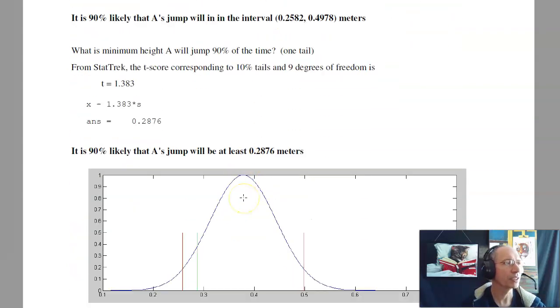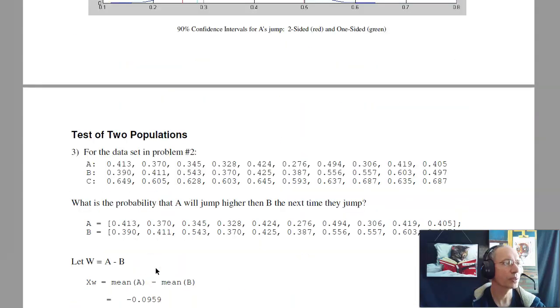If I want a single-sided tail, what I'll do is find the 10% tail. From StatTrek, 10% corresponds to a t-score of 1.38. So I'll go to the mean, 1.38 divisions. That gives this area to the left of the green line as 10%, this is 90%. That's the 90% confidence interval with a single tail. I'll jump 0.28 meters to infinity. With two tails, I get the red line. Each tail is 5%. So that's problem number 2.